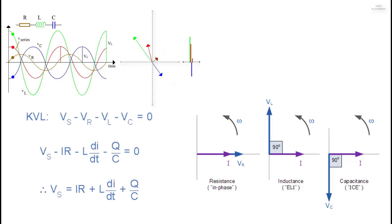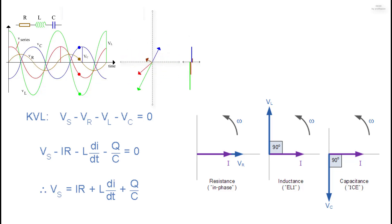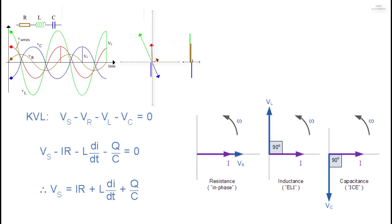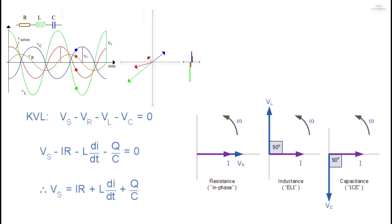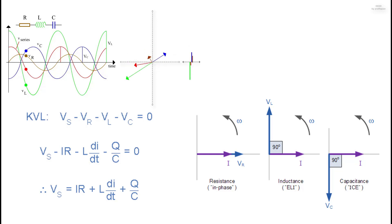Kirchhoff's voltage law for both loop and nodal circuits states that around any closed loop the sum of voltage drops equals the sum of the EMFs. Applying this law to these three voltages gives us the amplitude of the source voltage VS. The phasor diagram for a series RLC circuit is produced by combining the three individual phasors and adding these voltages vectorially.